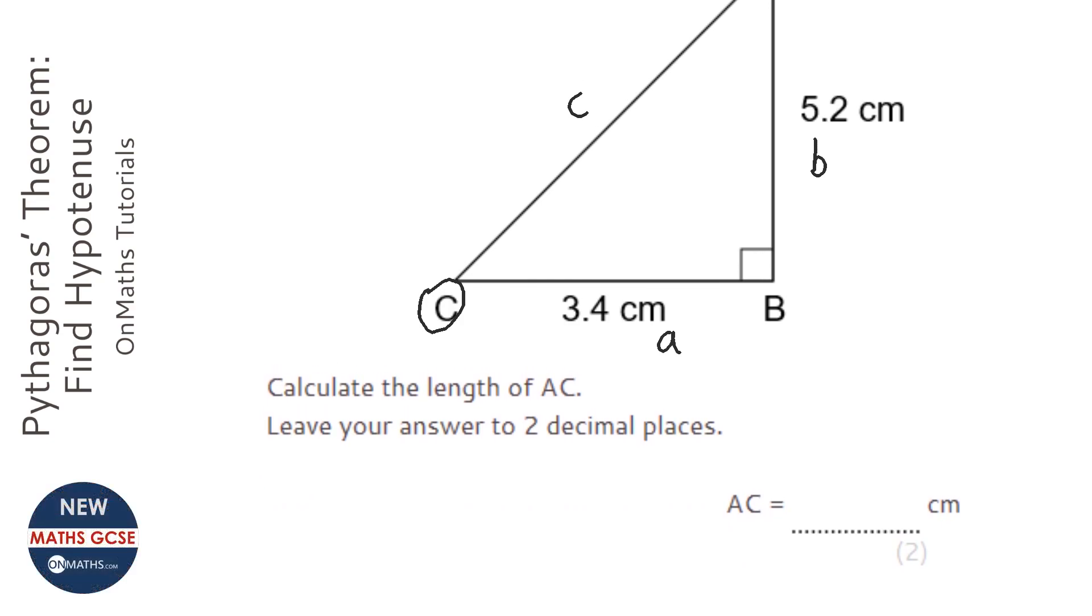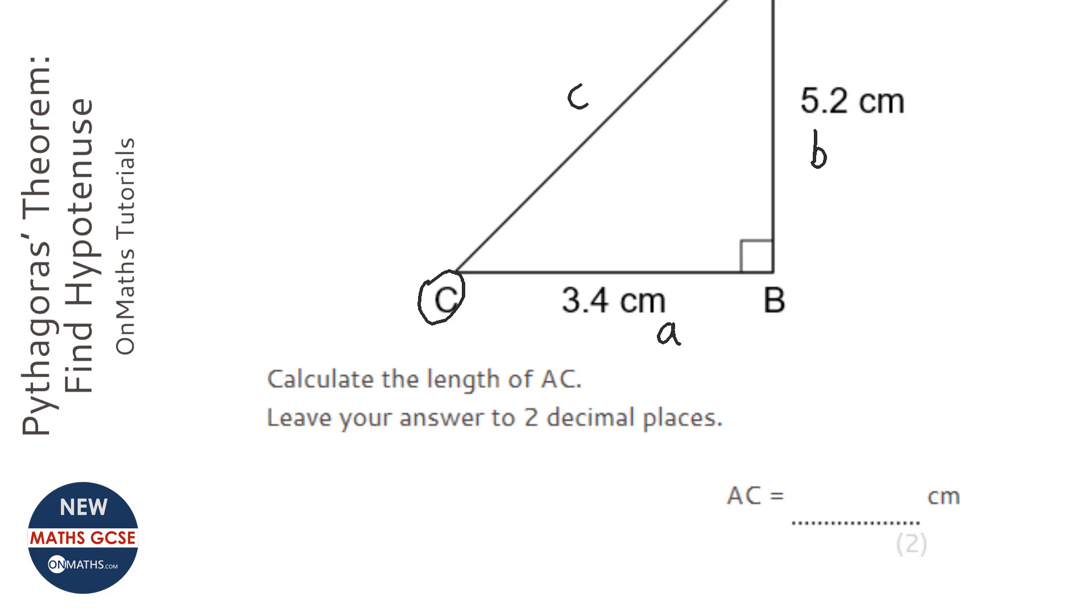And Pythagoras says a squared plus b squared equals c squared.